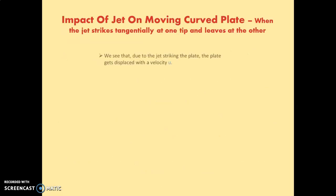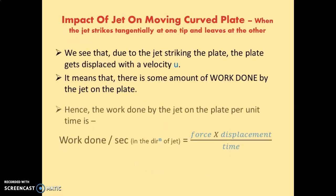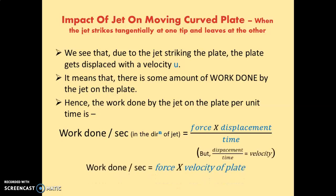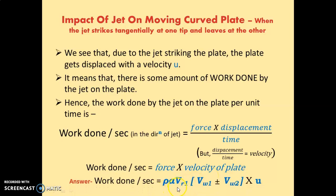Next, the work done per second equals force in the x-direction multiplied by the velocity of the plate. So work done per second equals rho·A·Vr1·(Vw1 ± Vw2)·U, where U is the velocity of the plate. This concludes the derivation for impact of jet on a moving curved plate when the jet strikes tangentially at one tip and leaves at the other. Thank you.